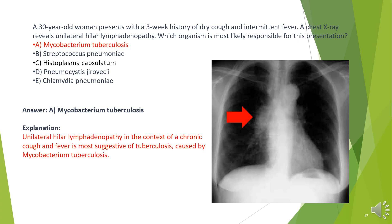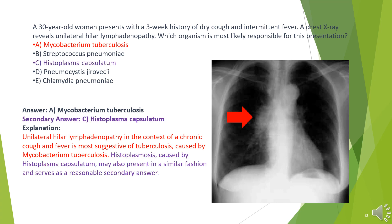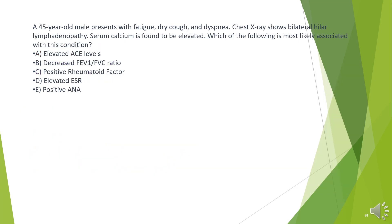The answer is A. Mycobacterium tuberculosis. Unilateral hilar lymphadenopathy in the context of a chronic cough and fever is most suggestive of tuberculosis, caused by Mycobacterium tuberculosis. Histoplasmosis, caused by Histoplasma capsulatum, may also present in a similar fashion and serves as a reasonable secondary answer.